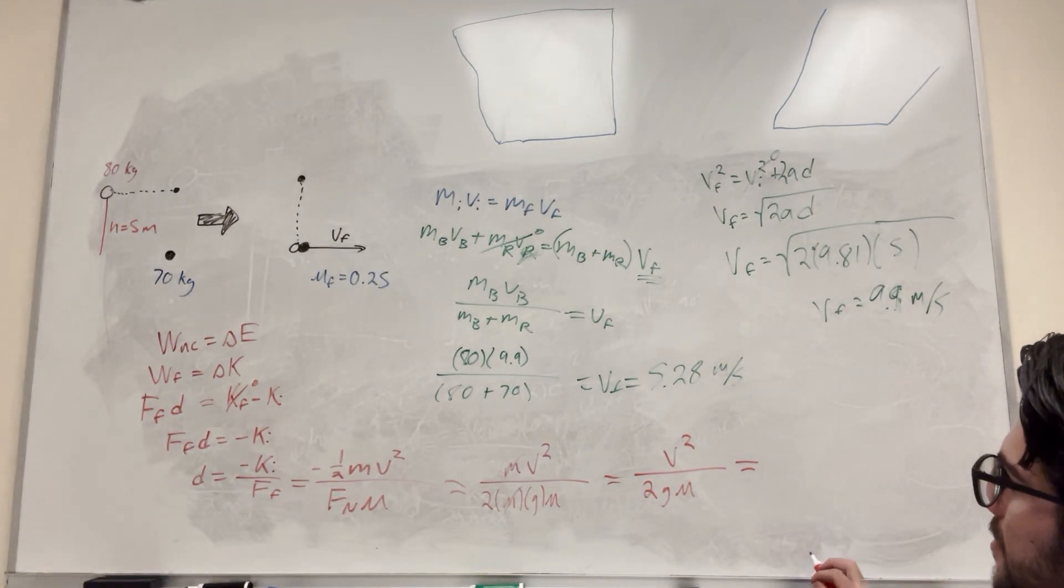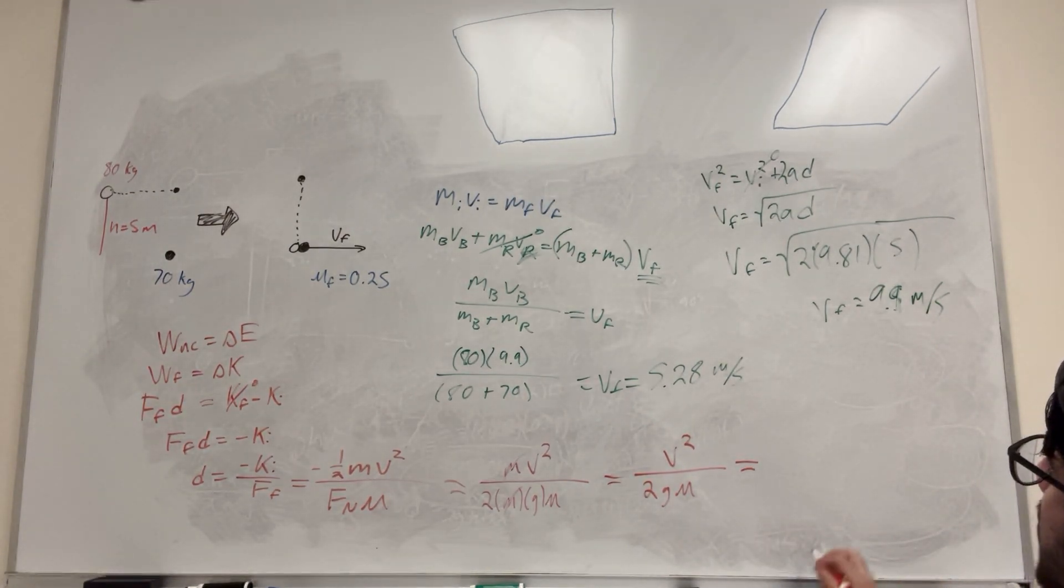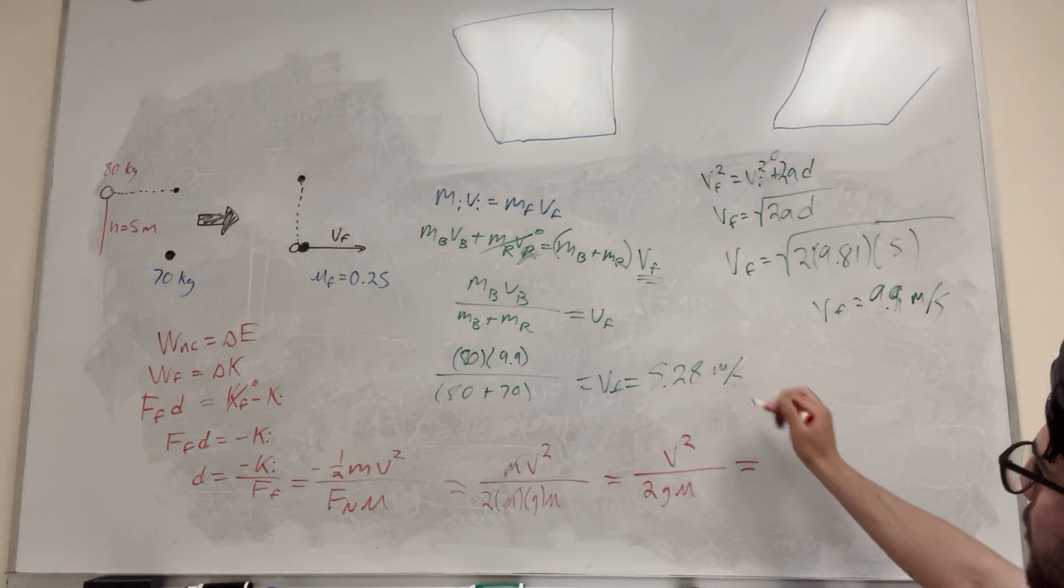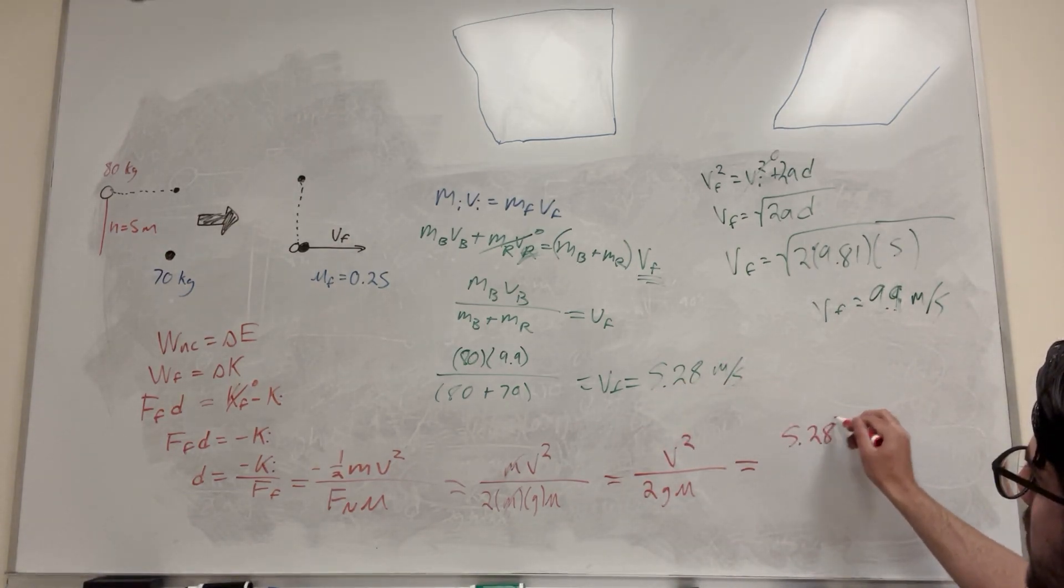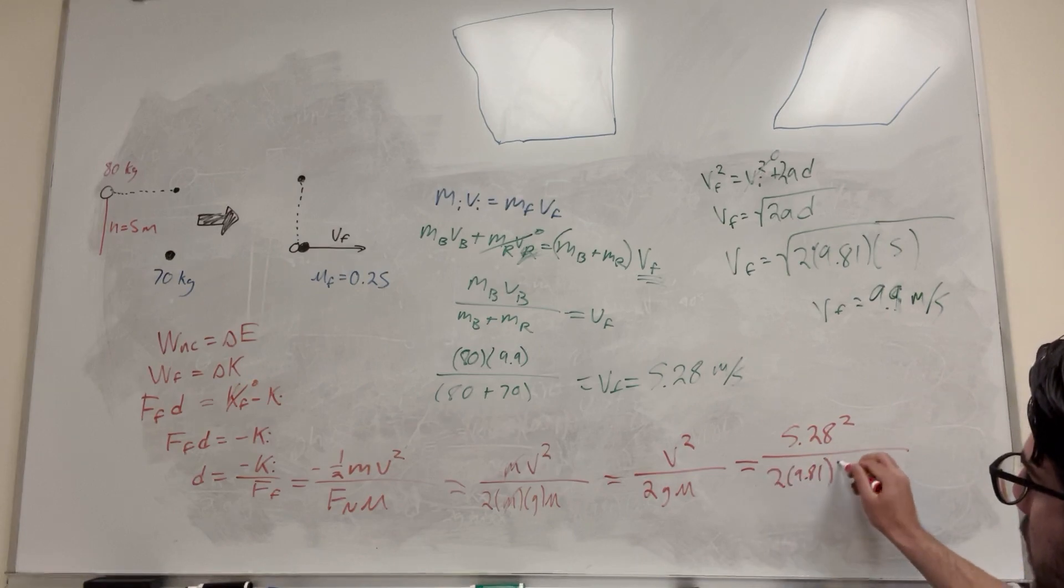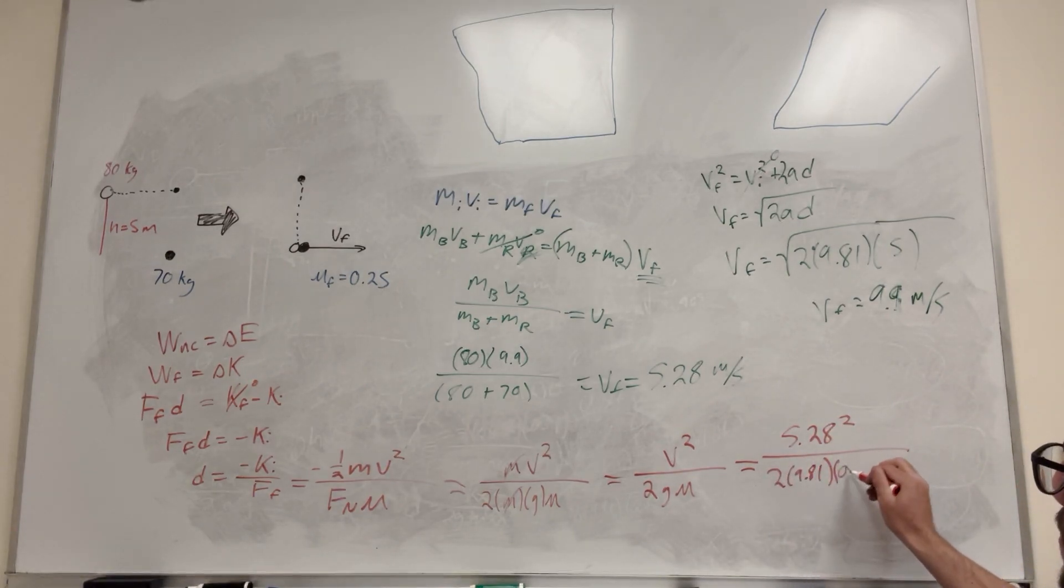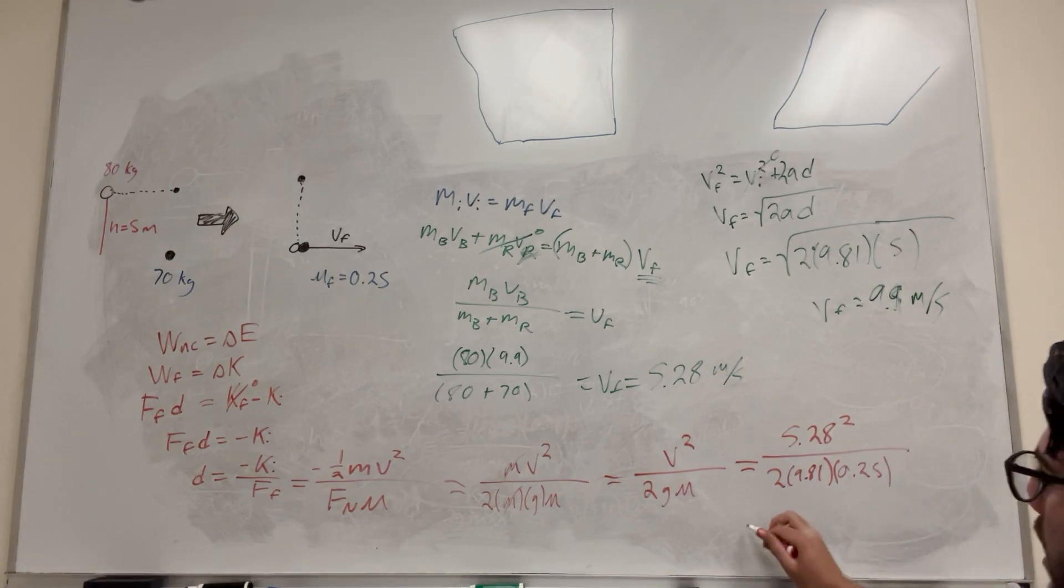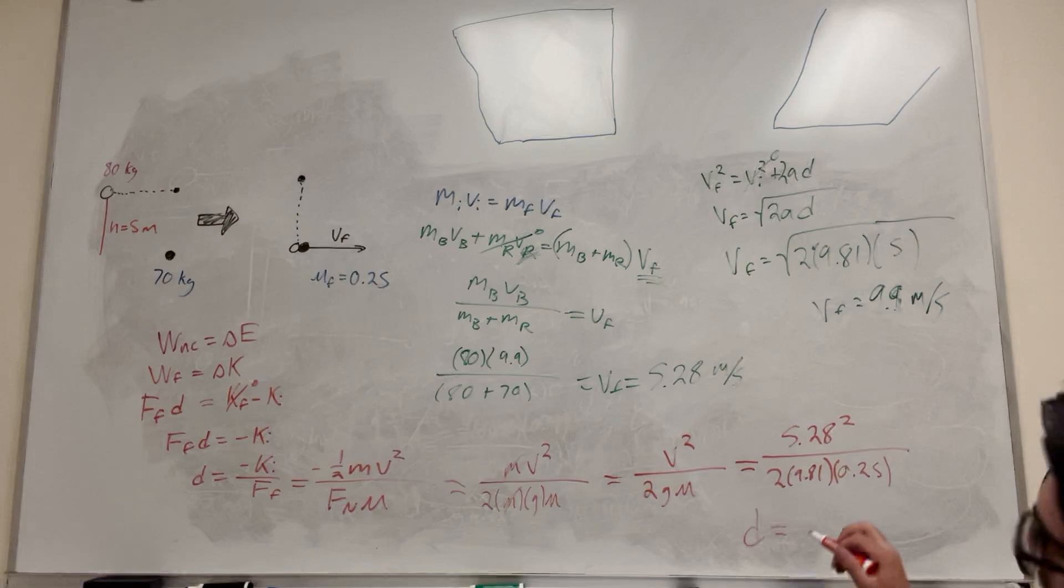So if you plug in your numbers, so velocity is not balanced, this number, so 5.28 squared over two times 9.81 is gravity, and our coefficient of friction is 0.25. And then you're going to get the distance is equal to 5.69 meters.